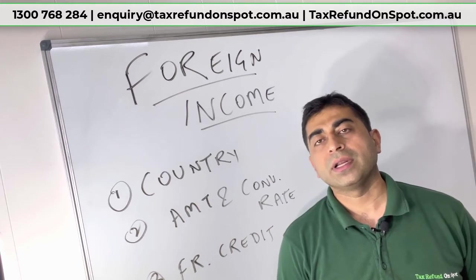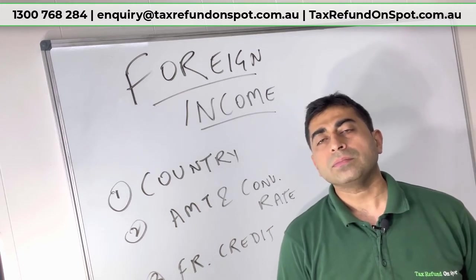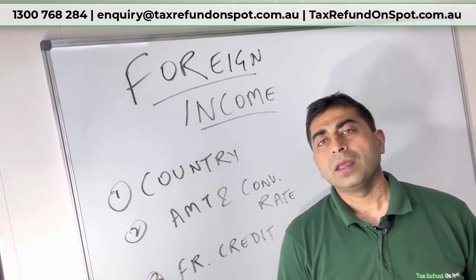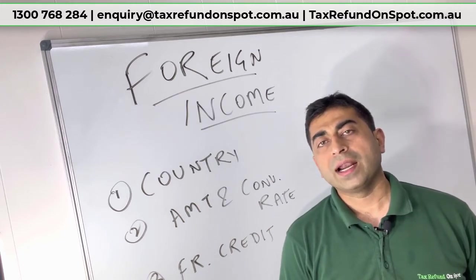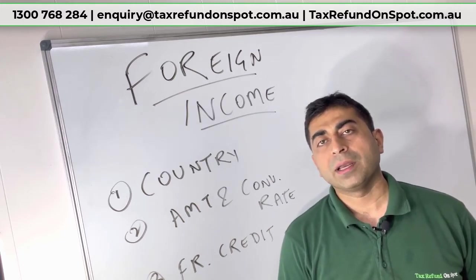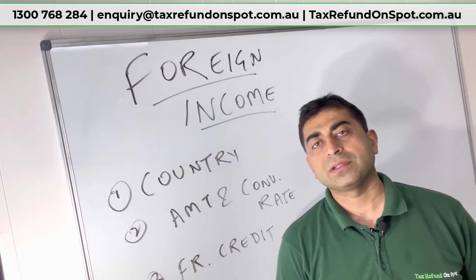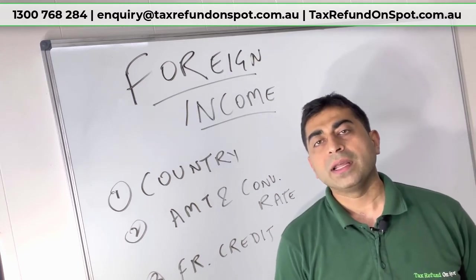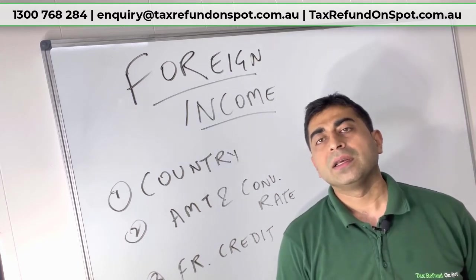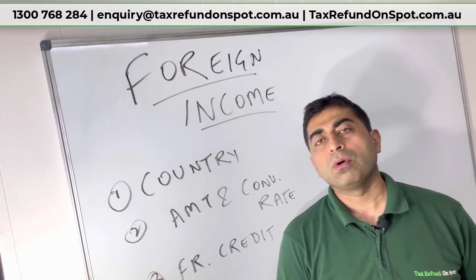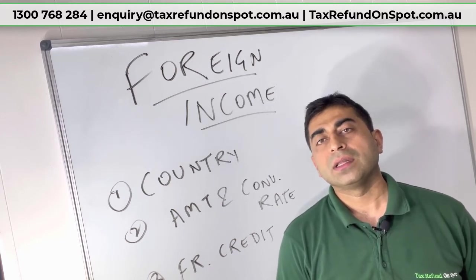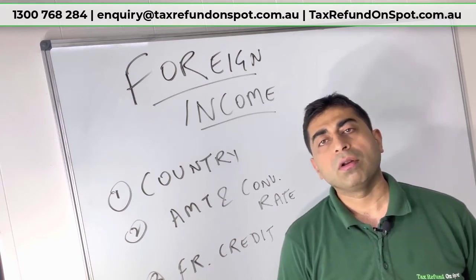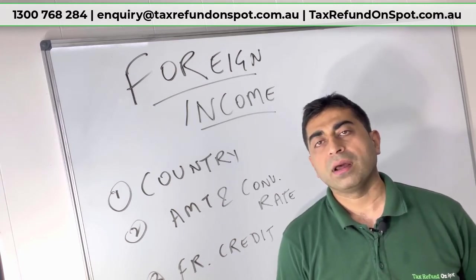Here in Australia, if the tax payable on that income is $40,000, then you will pay an extra $10,000. However, if you have paid more tax in the US, you will not get a refund — you don't get a refund of foreign tax credits.